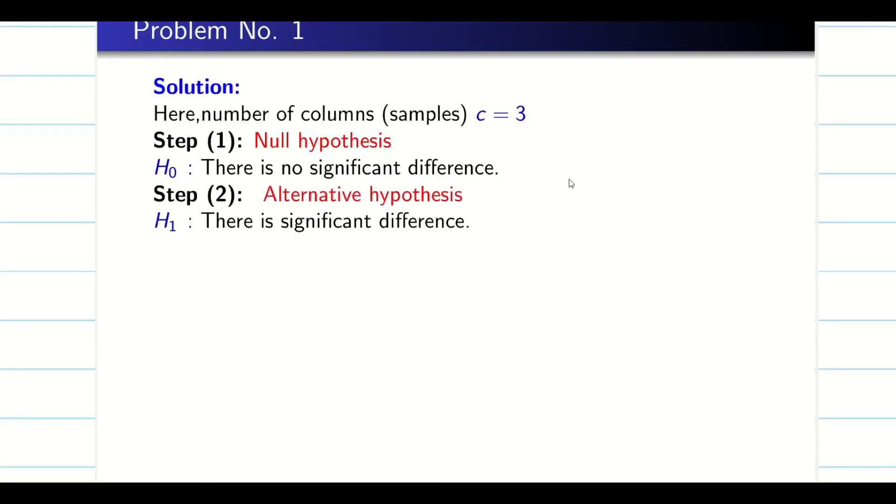Then step 2, alternate hypothesis is going to be: there is always a significant difference. And third one, alpha is going to be 5%. In unit 3, all the large sample tests, initially we predict the Z alpha value or T alpha value. Here I cannot predict it because after finding the table, I have to find my F alpha value. So right now I fix alpha is 5% which is given in the question.